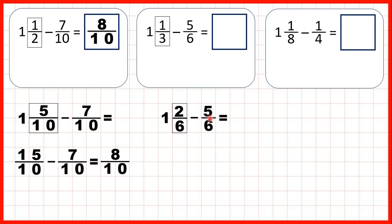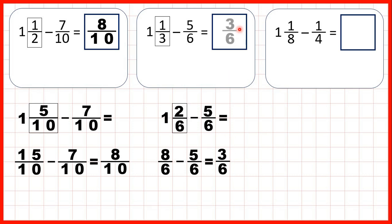But we need to subtract 5 sixths, and we only have 2 sixths in our mixed number. So we need to change it to an improper fraction. 1 times 6 is 6, plus 2 is 8, so that's 8 sixths. So now we can subtract 5 sixths. The denominator stays the same, 8 minus 5 is 3, so our answer is 3 sixths.